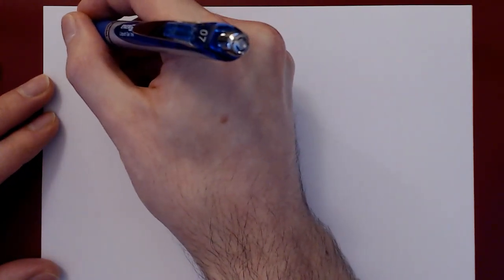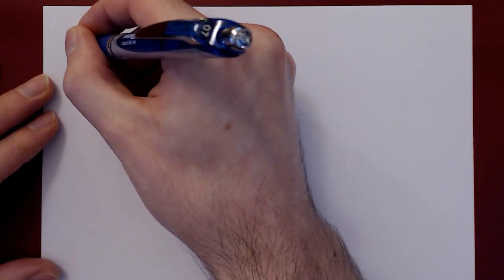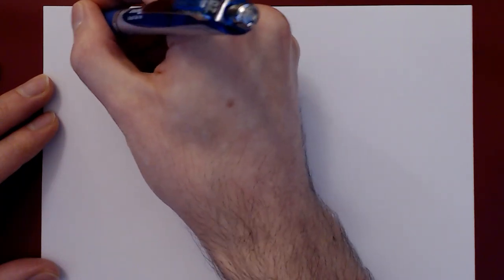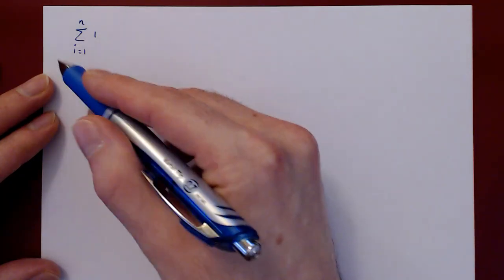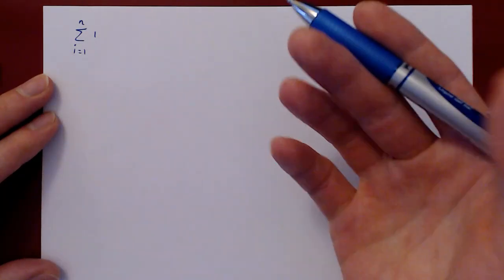So the first one is the sum as i ranges from 1 to n of 1. Now granted this is a rather trivial problem, but we have to start somewhere.